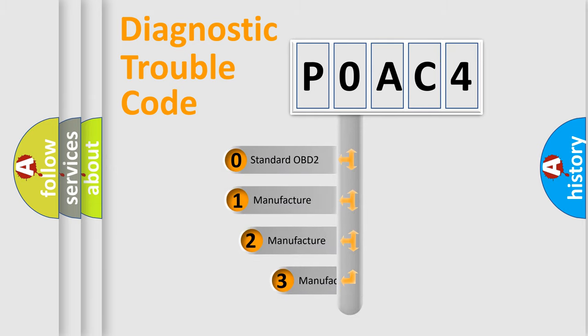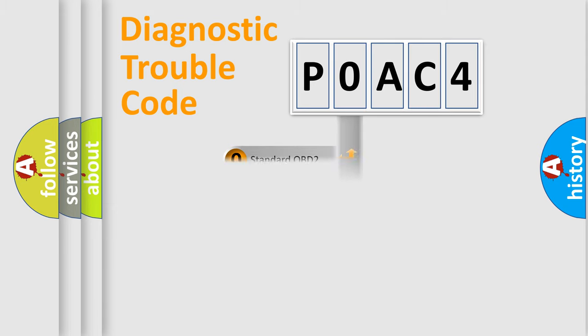If the second character is expressed as zero, it is a standardized error. In the case of numbers one, two, or three, it is a more prestigious expression of the car specific error.